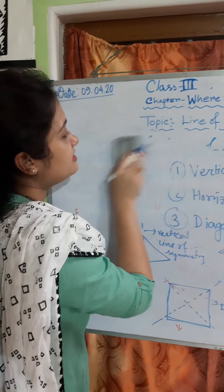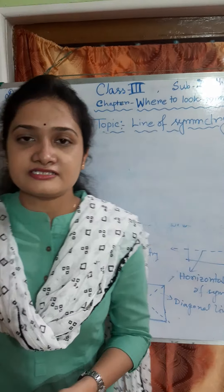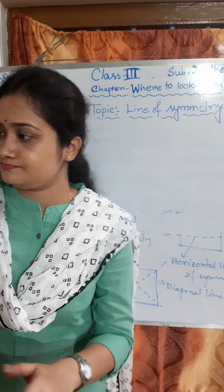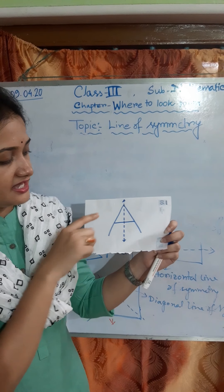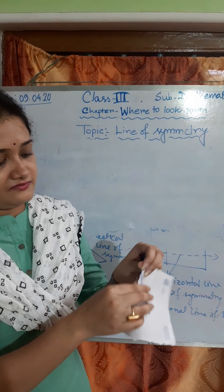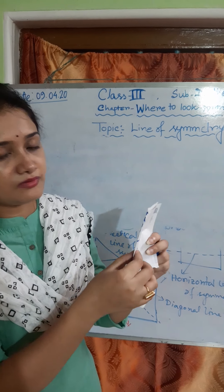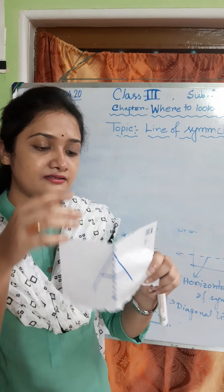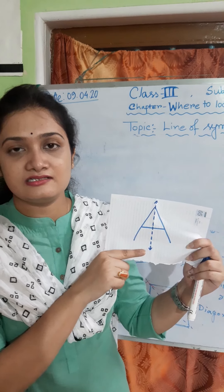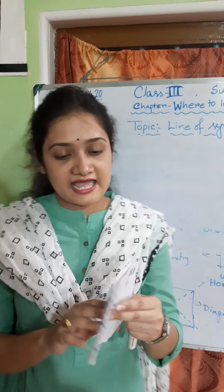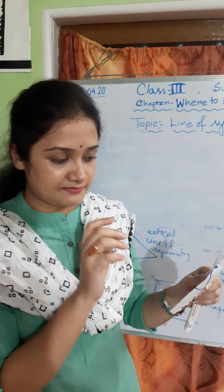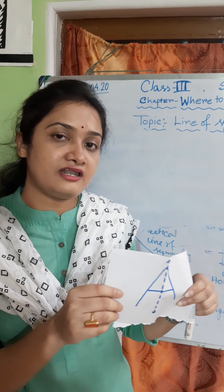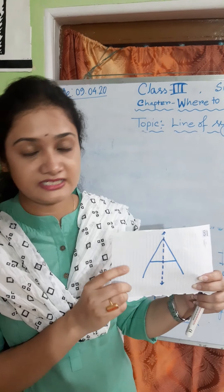How do we find the line of symmetry? There is a very simple activity. We need to take a piece of paper and write an alphabet, like A, as I have written here. If we fold it and get an overlapping portion, then this line is the line of symmetry. This means alphabet A has one line of symmetry, and the type of line of symmetry is vertical.